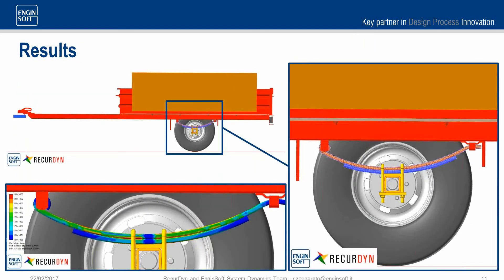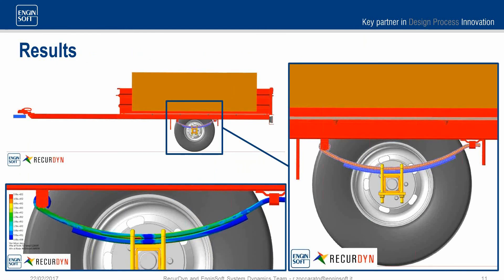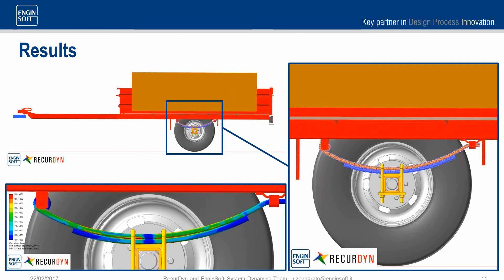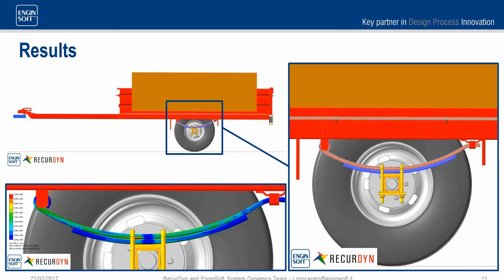After running the full flex simulation we obtain this visual result. The animation is very similar to the previous one, with the trailer oscillating a few times before stopping. However, this time the system is fundamentally different because the two parts of the leaf spring interact only through nonlinear contact, so the entire length of the body is loaded by a contact pressure.